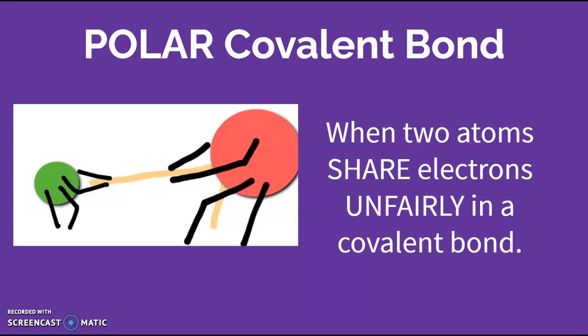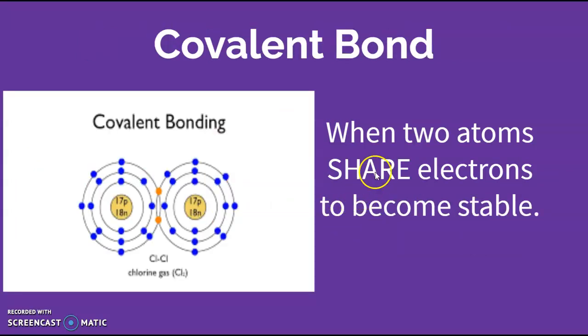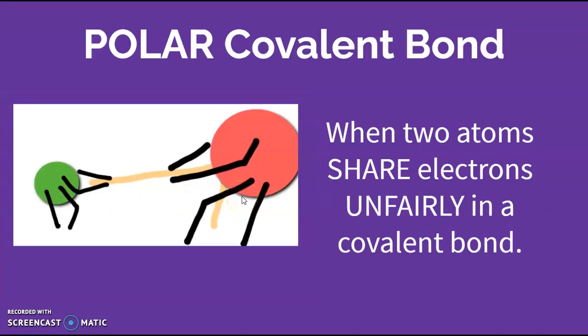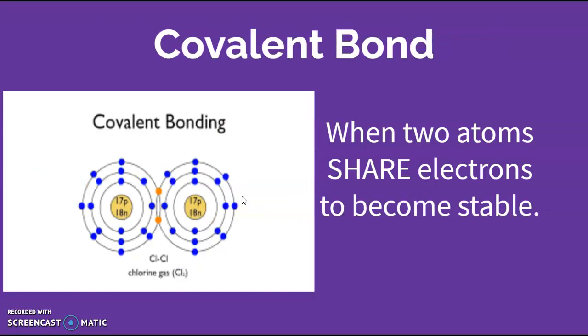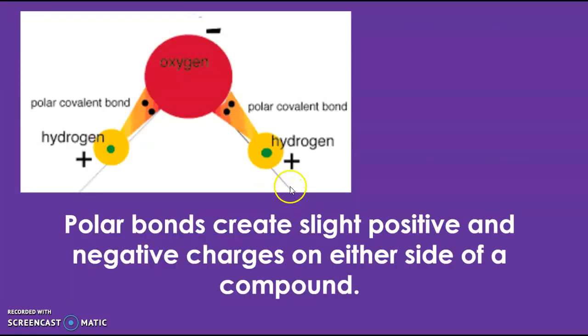This is going to become really important with water because it's going to lead water to have really amazing properties. So again, a covalent bond is just when we share electrons, and a polar covalent bond is when we share those electrons unfairly.